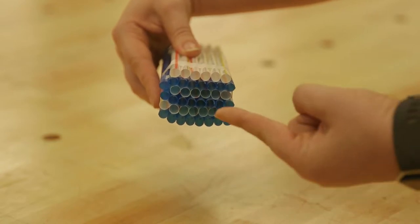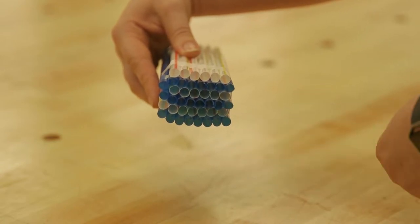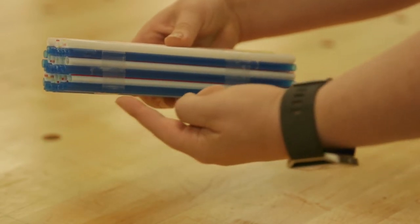End grain is the open end of the straws. Side grain is the sides of the straws.